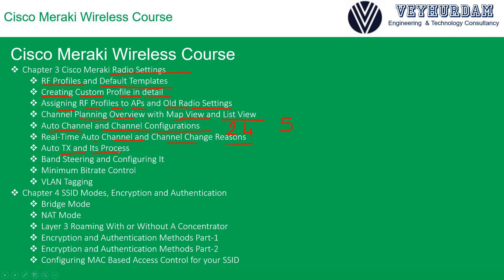Auto TX power and its tuning process will also be covered, followed by band steering and how to configure it. Minimum Bit Rate Control (MBC) and VLAN tagging will also be part of the Cisco Meraki radio settings coverage.